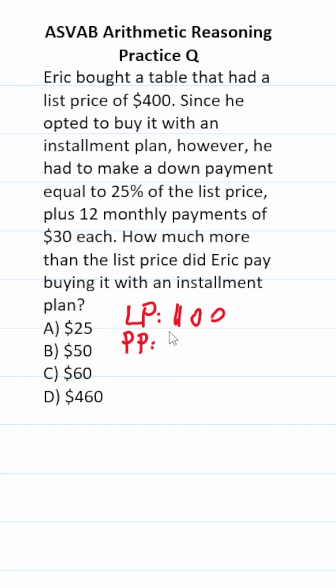First things first, we're told that we have to put 25% of the list price down for a down payment. So we're going to do one quarter, which is the same thing as 25%, times 400.